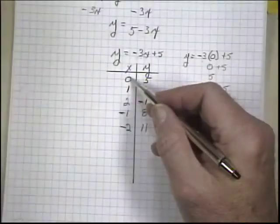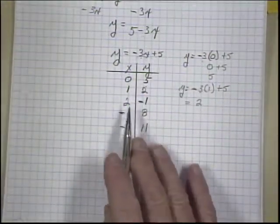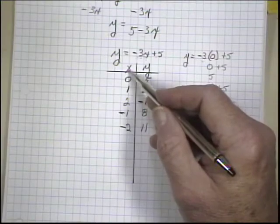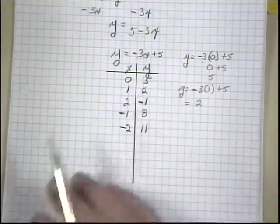So I've generated 5 ordered pairs. You can generate more if you like. And you don't always have to use what I use: 0, 1, 2. You can use larger numbers. But usually by keeping your x's small numbers, you generate smaller y's, and it's easier to build your graph.